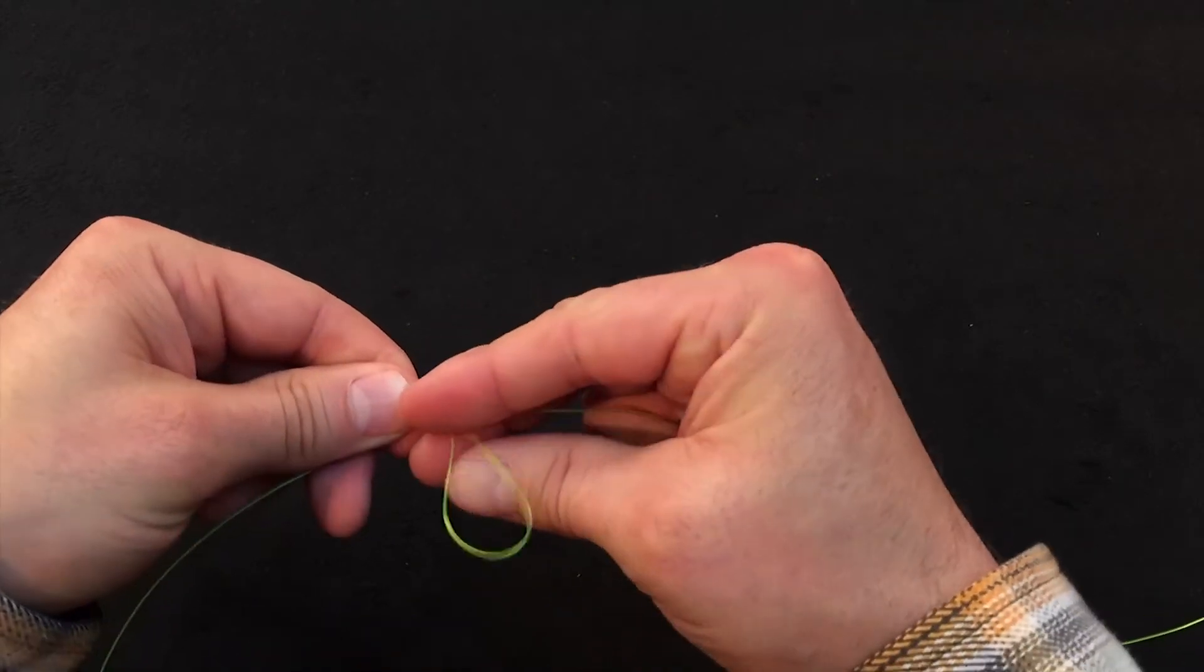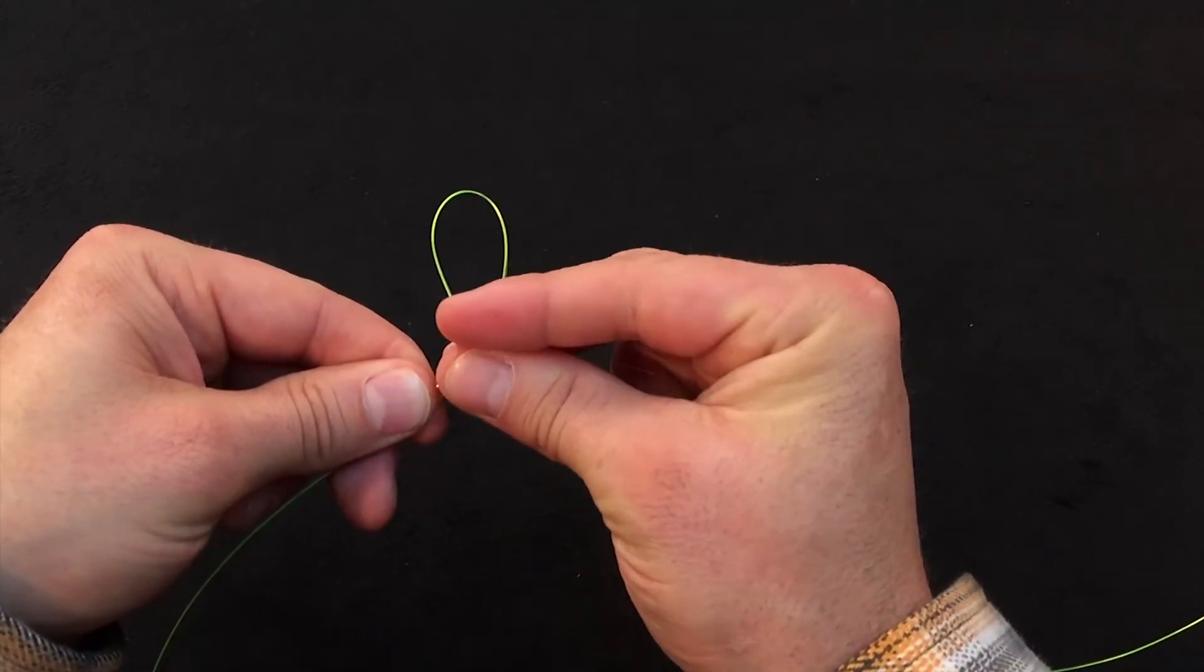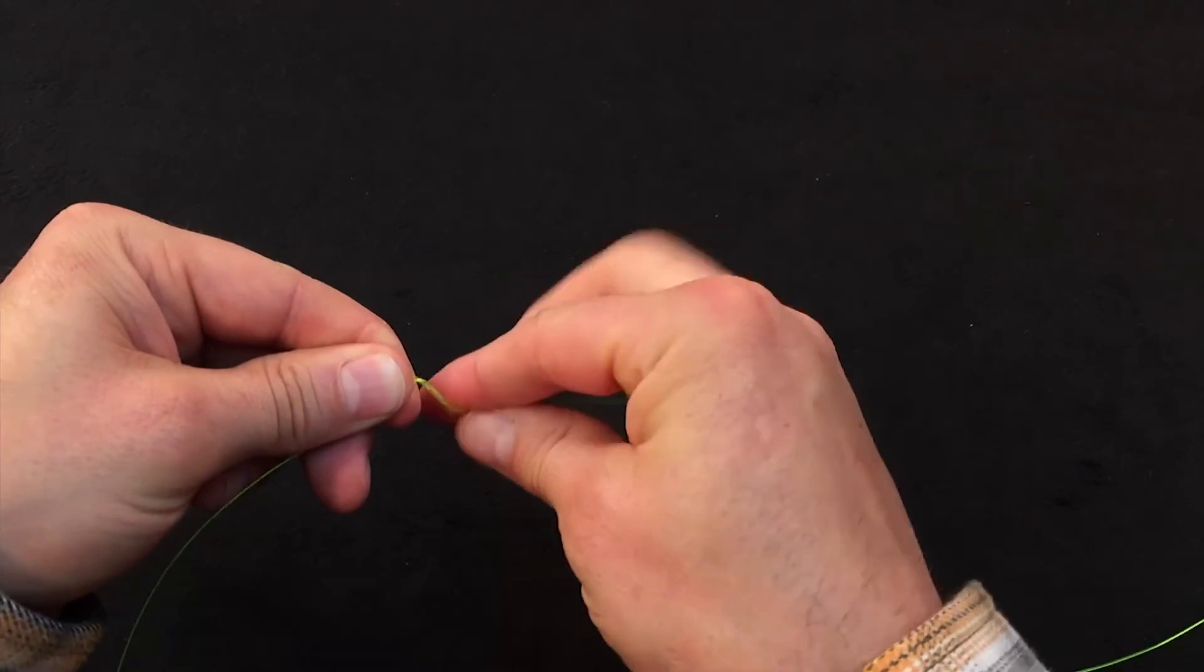Take that loop and you're going to wrap that around your main leader line three times. So one, two, three.